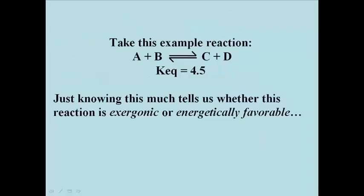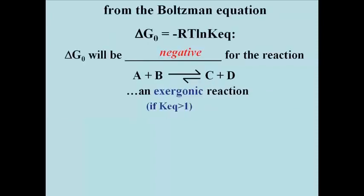Consider this hypothetical reaction. A plus B goes to C plus D. After measuring the concentration of reactants and products at equilibrium, we would calculate the equilibrium constant, the Keq, and show it to be 4.5 in this example. I can tell you immediately that this reaction is exergonic. From the Boltzmann equation, if the Keq, the equilibrium constant, is greater than 1, then the natural log of the equilibrium constant will be greater than 0, making delta G0 negative.